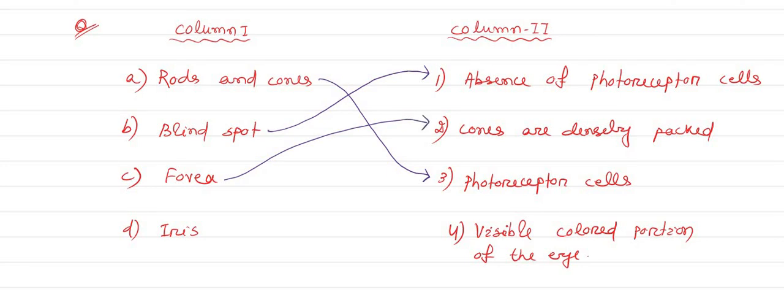That is, cone cells are densely packed in fovea. Iris - iris is the visible colored portion of the eye. This is the matching of the columns I have done for you. That's all about the answer. Thank you, bye.